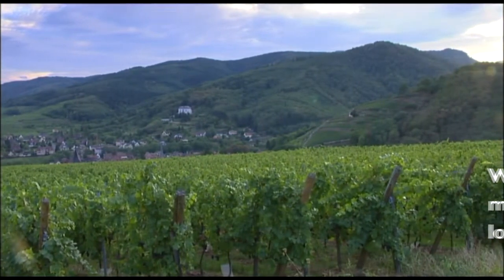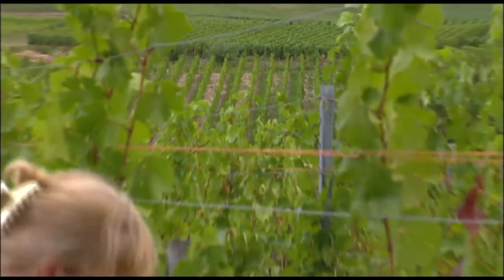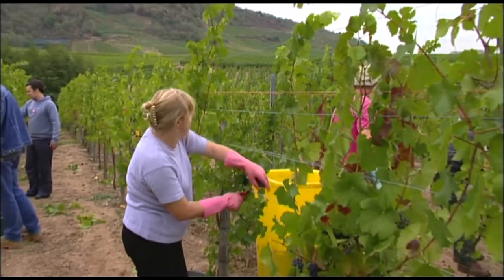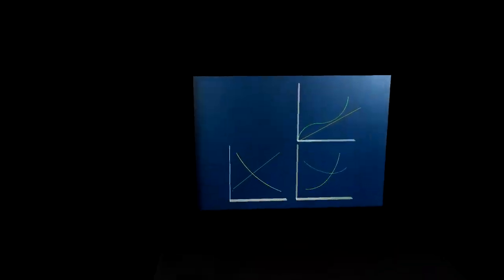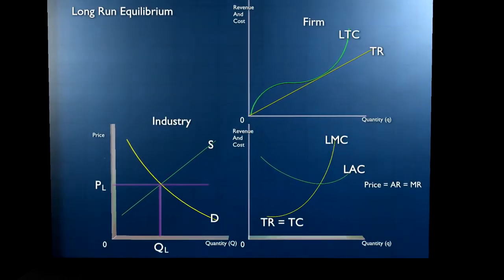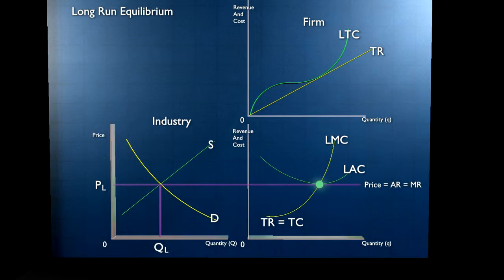The answer is to be found in the assumption that there are no barriers to the entry of new firms in the long run. Let's look at the diagram, where we start off with a long-run price of PL, where supply and demand are in equilibrium, and the representative firm on the right is just breaking even. Average revenue is just high enough to cover long-run average cost, so QL is the optimum level of output at which the firm just breaks even.